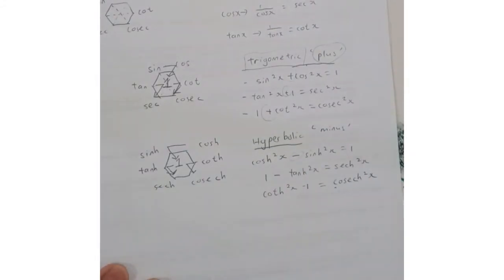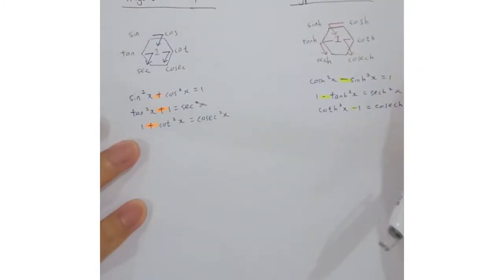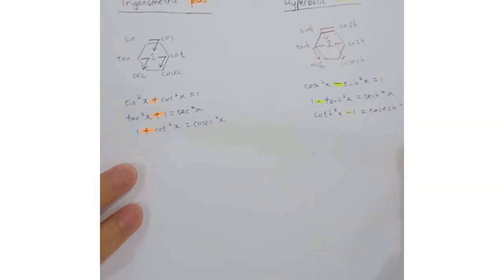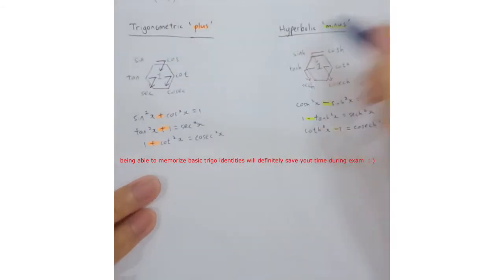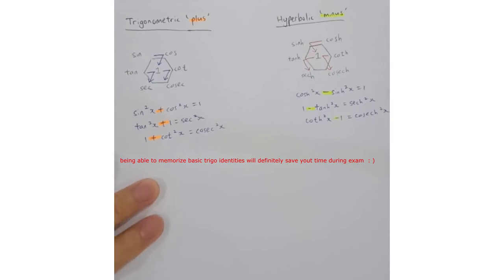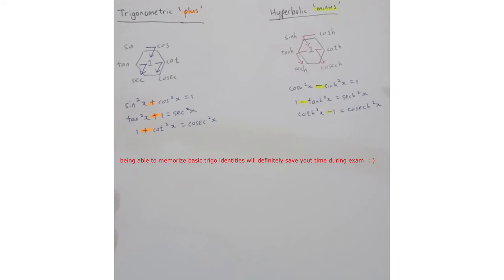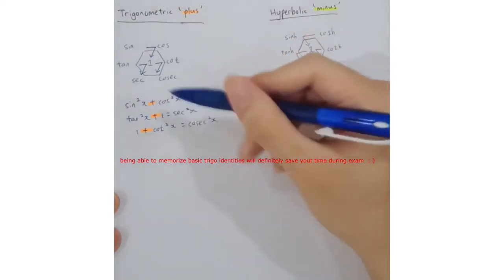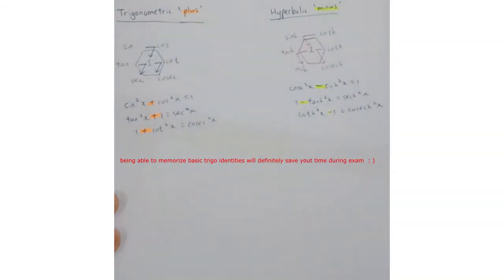To summarize, what you need to pay attention to is the plus sign for trigonometric functions and the minus sign for hyperbolic functions — and that's it for this video. In the next video, I will talk about how to memorize the derivatives of trigonometric functions using this hexagon method too. Thank you.